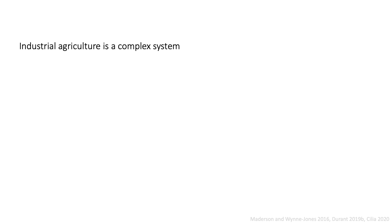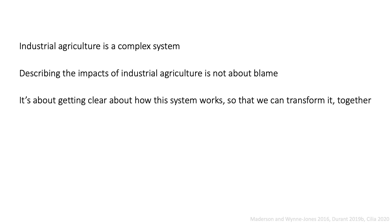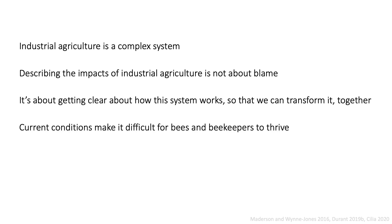To answer this question, I think we have to remember that industrial agriculture is a complex system, one in which all of us — researchers, beekeepers, and farmers alike — are embedded. Beekeepers are acutely aware of the myriad problems that this system poses, and work in their own ways to address them. Describing the impacts of industrial agriculture is not about blame. It's about getting clear about how this system works so that we can transform it together. It makes sense to acknowledge that, for many, beekeeping is a labor of love, and current conditions make it difficult for bees, beekeepers, and beekeeping businesses to thrive.